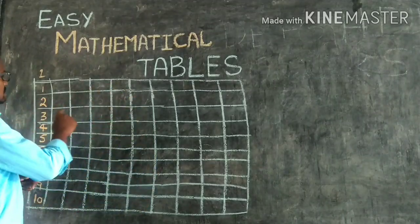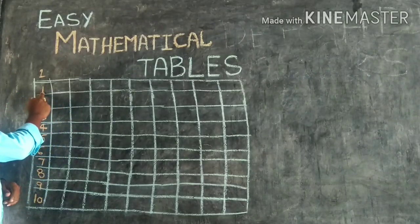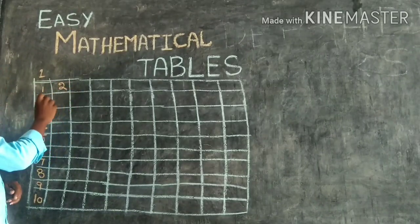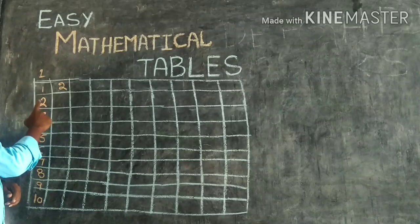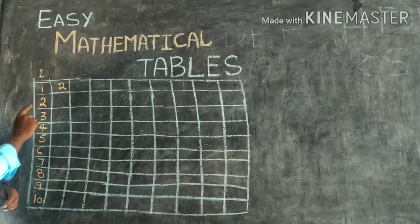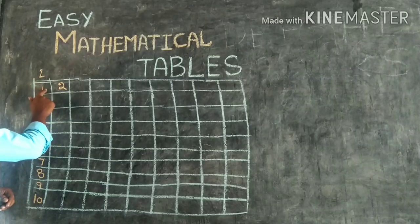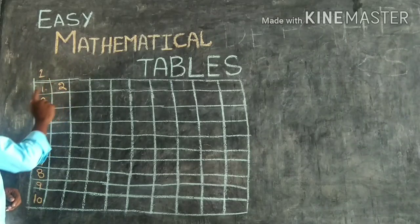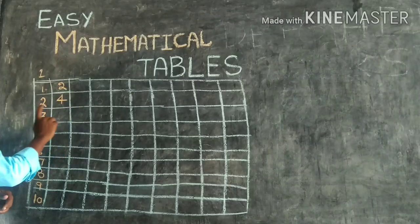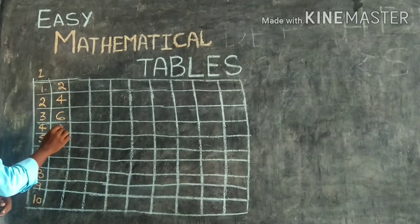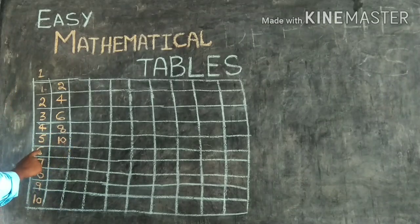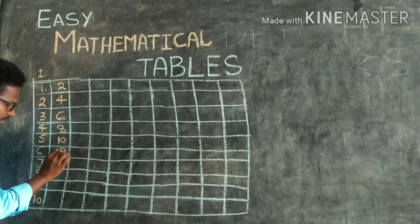Coming to boxes — I have literally only boxes here. You just consider this as a box. Don't consider the number; just consider this is your box. First box, then second box, third box, fourth box, fifth box, sixth box, seventh box, eighth box, ninth box, tenth box — like that.